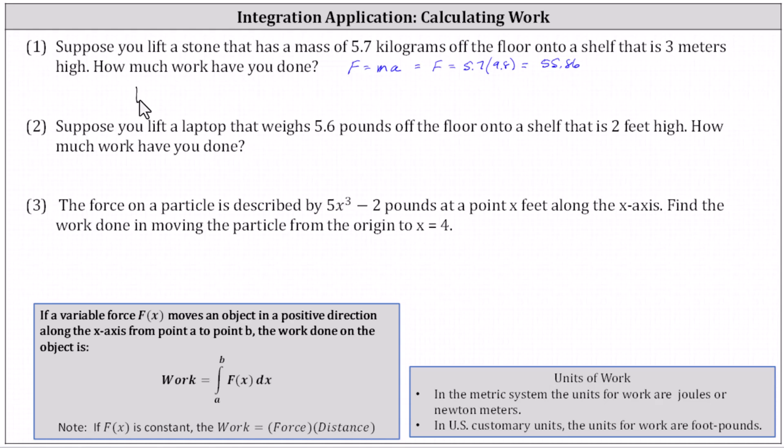The work W is equal to force of 55.86 times the distance of three meters, which equals 167.58 joules.